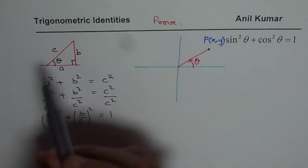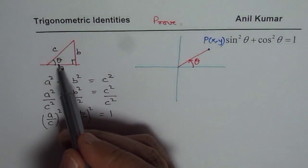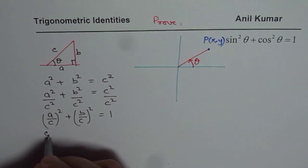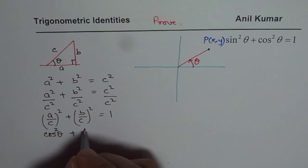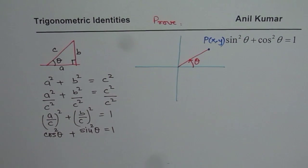Now, what is a over c? A over c is cosine of theta. So that is cos theta. So cos theta square we normally write like this. Plus b over c is sine theta. We get sine, we get sine squared theta equals to 1. Do you see?